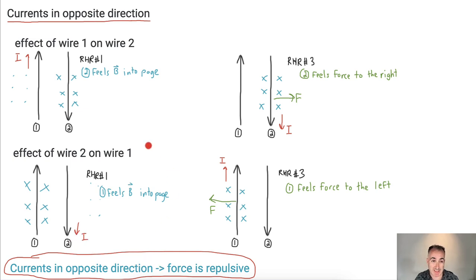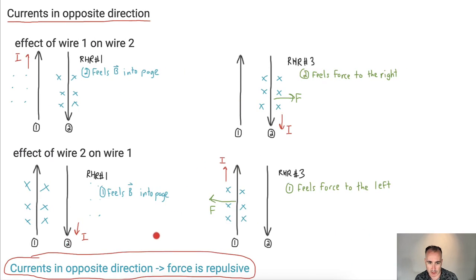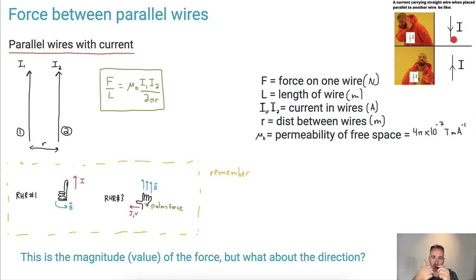You could just memorize this, but it really helps to learn how it works because you could be asked all sorts of questions related to these forces and magnetic fields. Now back to the Drake meme: a current-carrying wire placed parallel to another wire — if the currents are in opposite directions, they repel, like Drake saying no. But if they're in the same direction, Drake says yes, because the force is attractive. If the currents are in opposite directions, the force is repulsive.